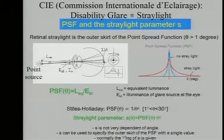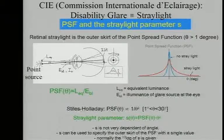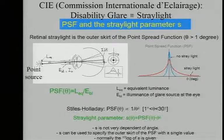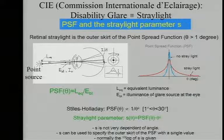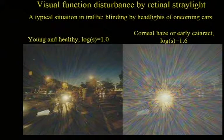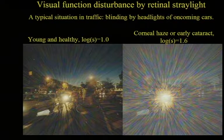Light scattering is considered part of the point spread function. We can measure it, and it is defined by the International Committee by means of the value of equivalent luminance — the amount of light equivalent to the amount falling on the retina. That's the way we measure it.